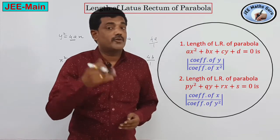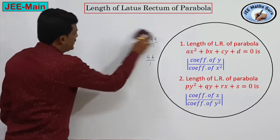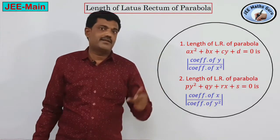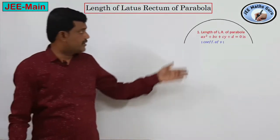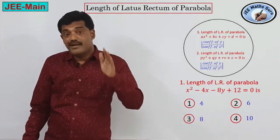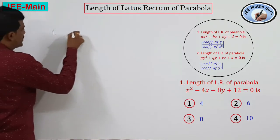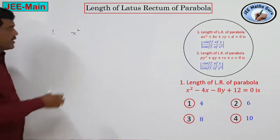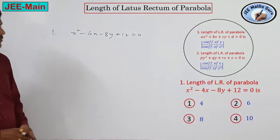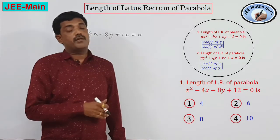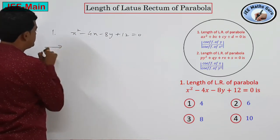Using this shortcut we can find the length of the latus rectum easily. We will solve some problems using this trick and verify whether the shortcut gives the correct answer by also applying the regular method. The first question asks us to find the length of the latus rectum of the parabola x² - 4x - 8y + 12 = 0.